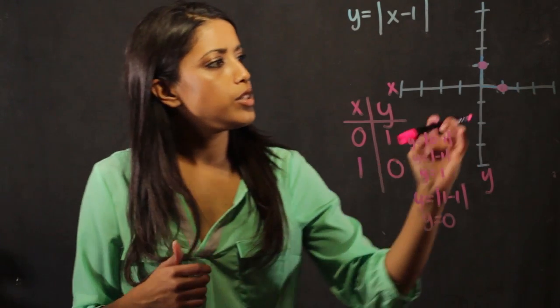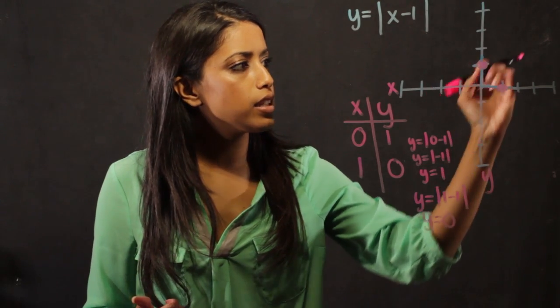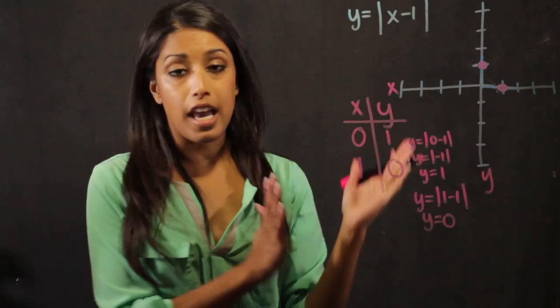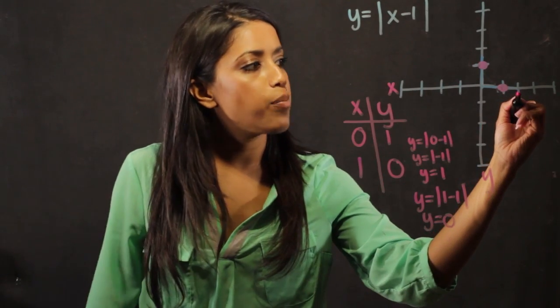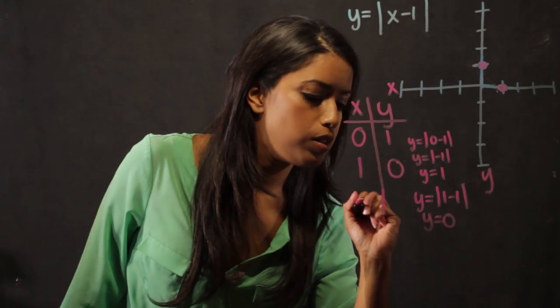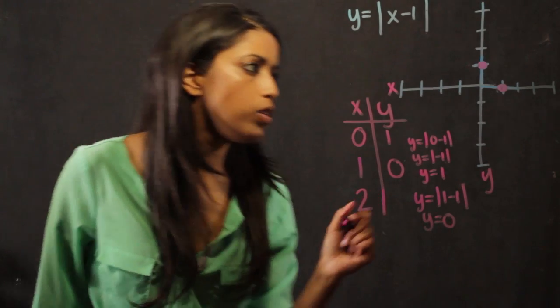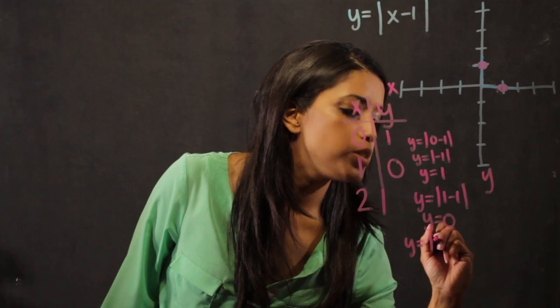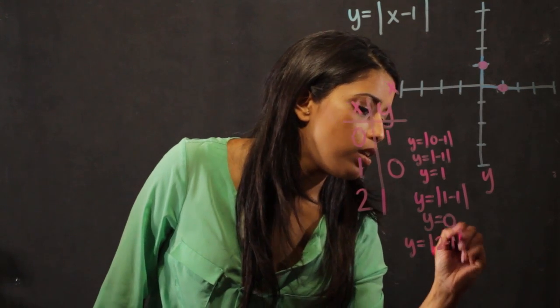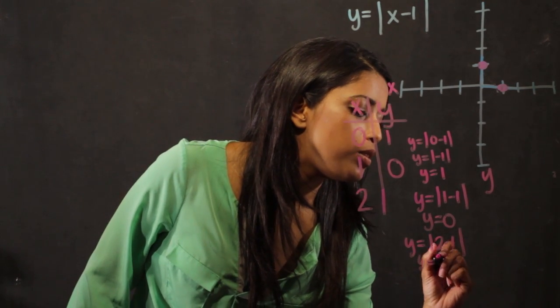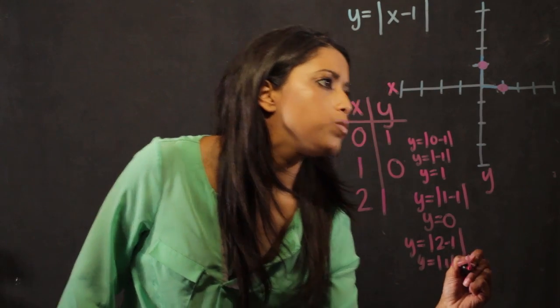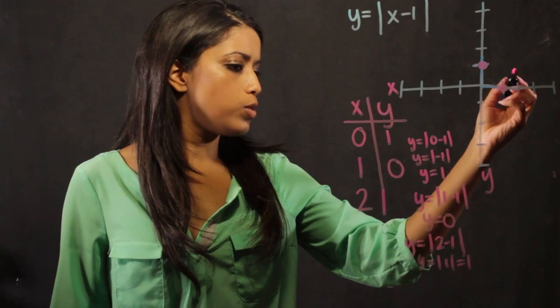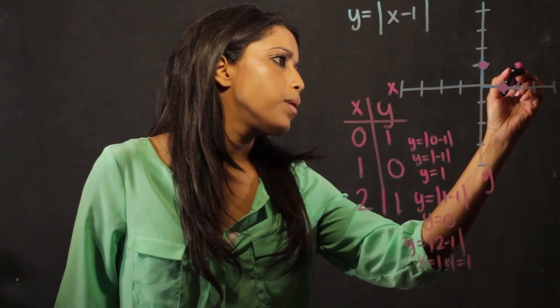Next, I'm going to see what's happening over here because I see the line going this way. I know that an absolute value graph goes up in a V shape. So let's see what's happening at x equals 2. When x equals 2, y equals the absolute value of 2 minus 1, which is the absolute value of 1, which equals 1. So when x is 2, y is 1.